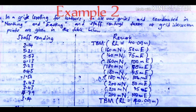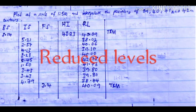Please try out example two. It is very interesting. We are given the staff readings and we are required to first find the reduced levels before you can proceed with the drawing of the plan.